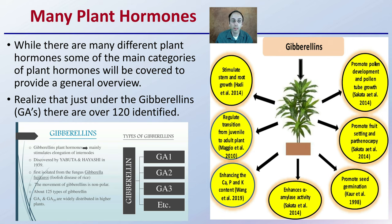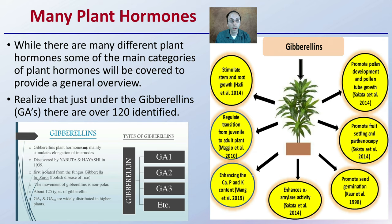Just under gibberellins — abbreviated GAs — there are over 120 identified variants with somewhat different effects on plants, commonly named GA1, GA2, GA3, and so on. Within gibberellins alone, they can have effects ranging from enhancing calcium, phosphorus, and potassium content, to promoting seed germination, to stimulating stem and root growth. So there are a lot of different studies with a lot of different hormones.